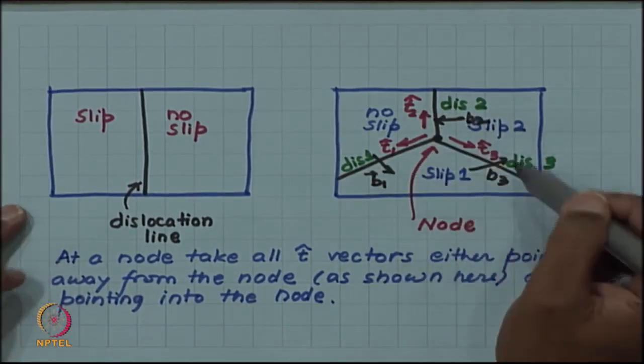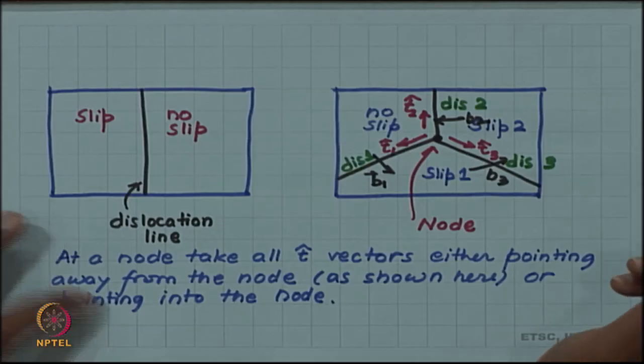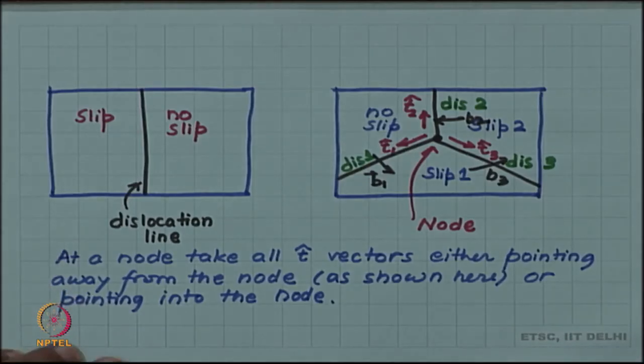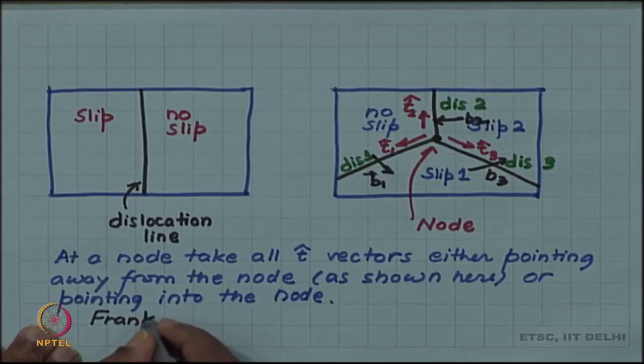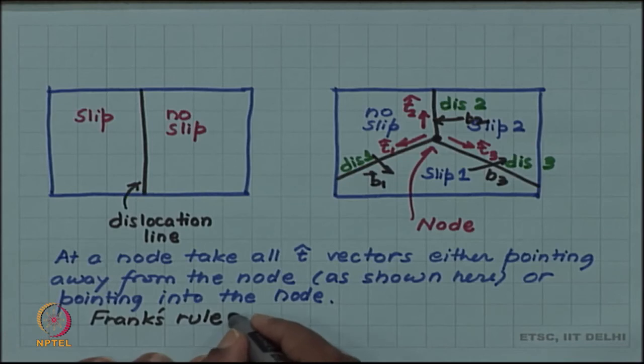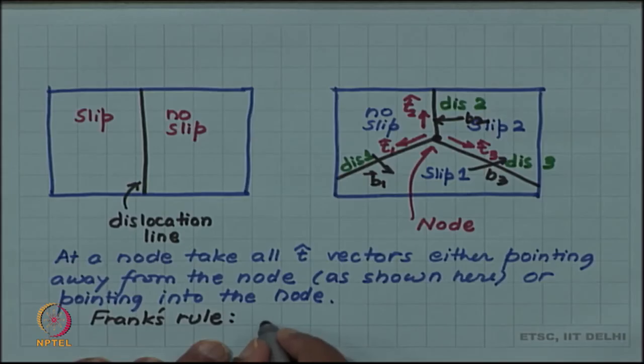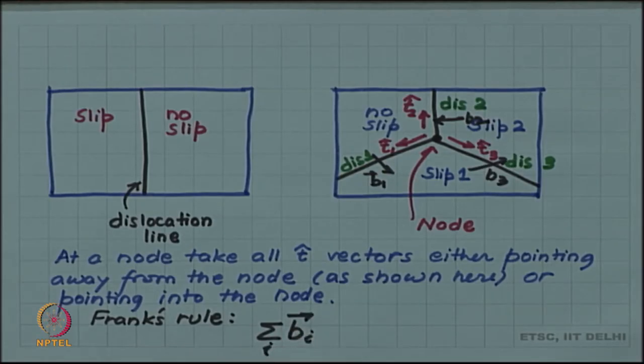All the dislocation line will have the corresponding Burgess vectors. And the interesting thing is that, and that is called Frank's rule, that the sum of Burgess vectors at the node has to be 0. If you follow this convention then sum of all Burgess vectors at the node will be 0.